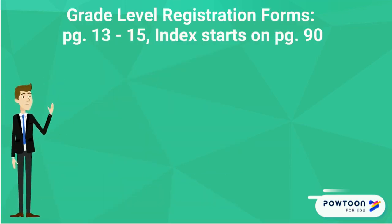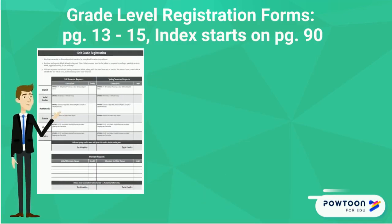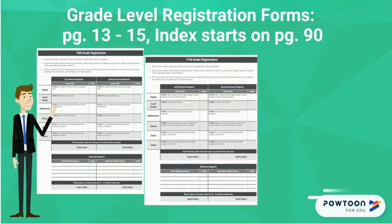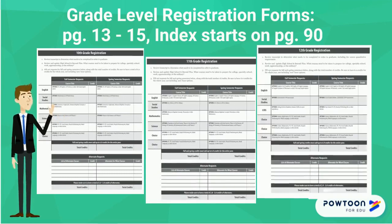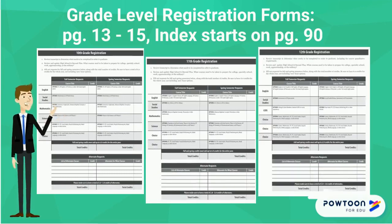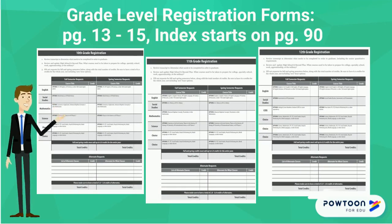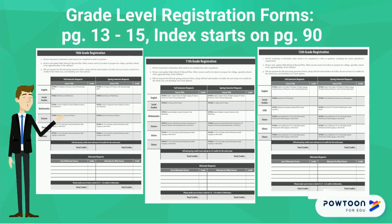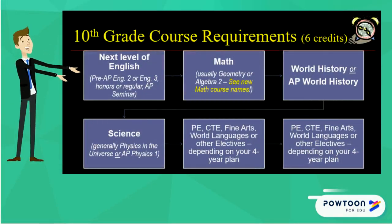On the following pages in your course catalog, you will find your grade level registration form. Course suggestions are also listed for each grade level. Use this to plan out your courses for the next year before entering them online. You can also find an index of courses and the credits they offer at the end of your course book. The following slides are typical schedules for each grade level, excluding the 9th grade.